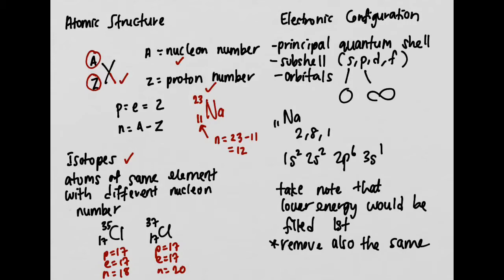Moving on to electronic configuration, there are three things to remember: the principal quantum shell and subshells — which are divided into S, P, D, and F — and also the atomic orbitals. The principal quantum shell is given numbers 1, 2, 3, 4, and so on.